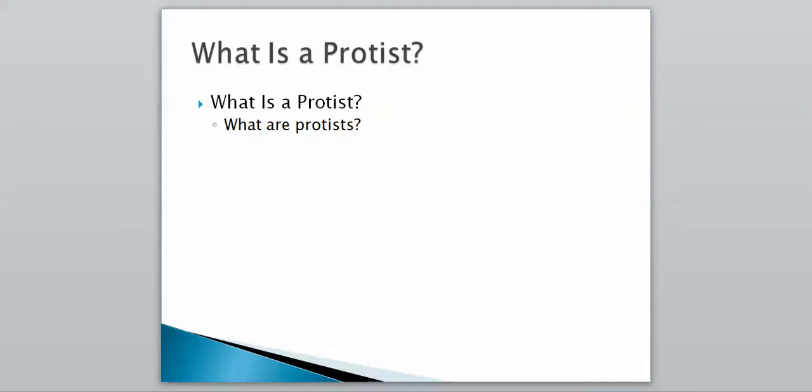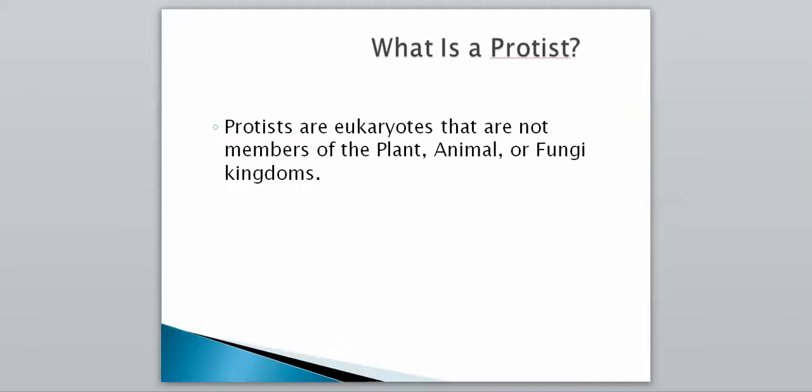because that is the general name for all the organisms that are going to fall underneath this group. So protists are going to be eukaryotic organisms that are not members of the plant, animal, or fungi kingdom. So fungi is what we looked at first, then we just got finished with all the plants. Next semester we're going to look at the animals, so we need to make sure we hit on all these groups of eukaryotes, because we can't leave out the protists. So this is our eukaryotic organisms.